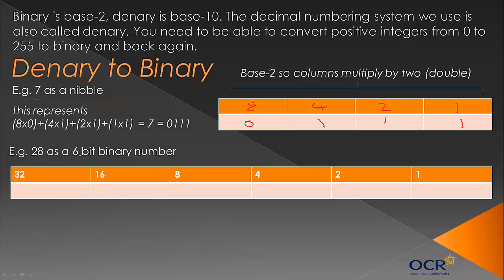They won't always ask you to do it as a specific number of bits, but when they do you must respect that or you'll lose marks. So 32 does not go into 28, so that column is 0. 16 does go into 28, remainder 12. 8 goes into 12 once, remainder 4. 4 goes into 4 once, remainder 0. So the last two columns are 0. The answer is 011100.